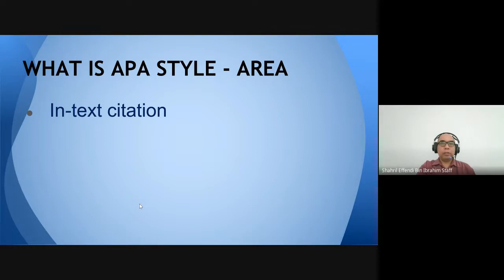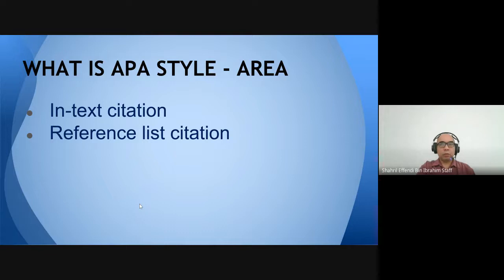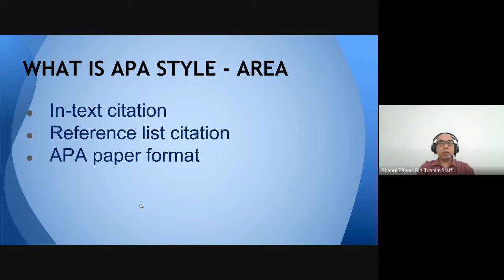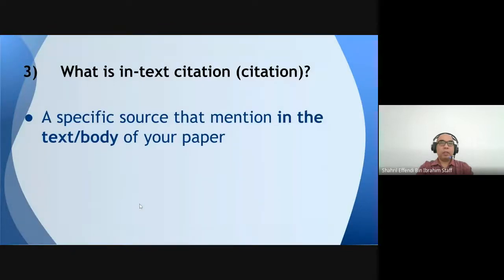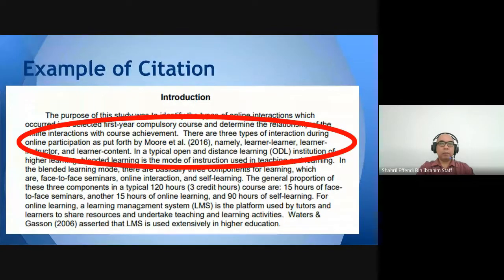There are three areas in APA style. The first area is in-text citation, which I will elaborate on shortly. The second area is the reference list at the end of our writing. The third is APA paper format, but at OEM we do not follow APA paper format — we use OEM's own paper format. So in this session I will cover only the first and second areas. In-text citation is a specific source mentioned in the text or body of the paper.